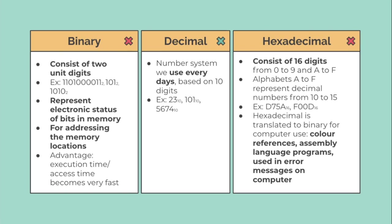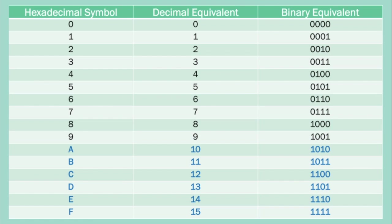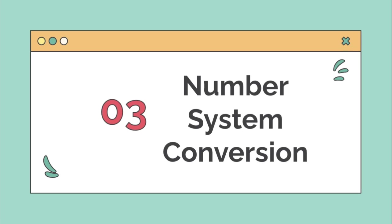Hexadecimal consists of 16 digits from 0 to 9 and A to F. The alphabets A to F represent decimal numbers 10 to 15. Examples of hexadecimal values include D75A and F00D. Hexadecimal is translated to binary for computer use, such as in color references and assembly language programs, and it is also used in error messages on computers. As you can see in the table, hexadecimal uses 0–9, then A through F, where A equals 10 and F equals 15.